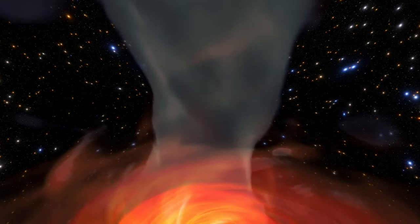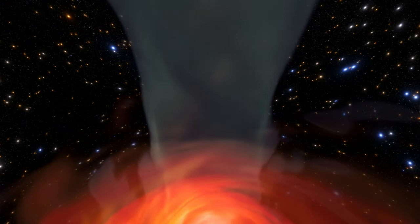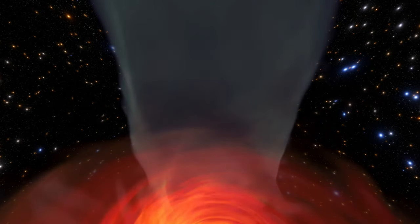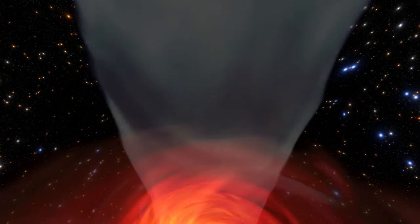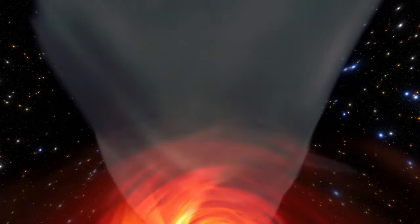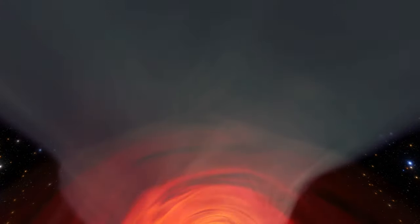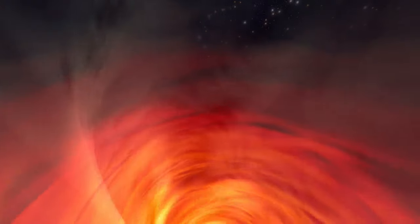These supermassive black holes often have billions of solar masses. The gravity around them is immense. As the material in the accretion disk orbits and falls inwards, the friction from the material in the disk rubbing together creates energy so intense that a quasar can be thousands of times brighter than our Milky Way.